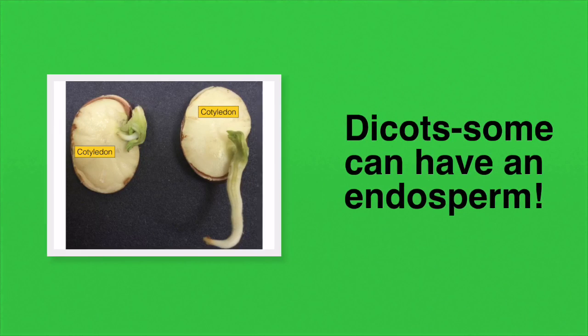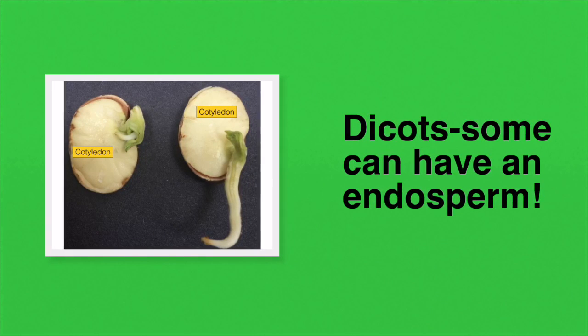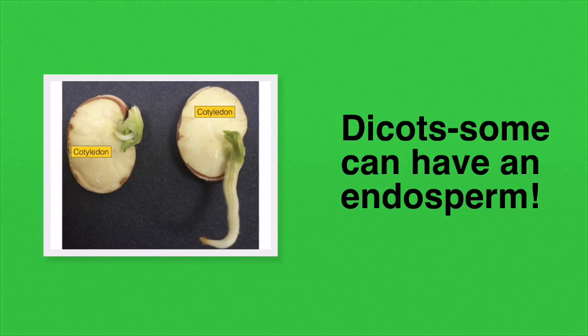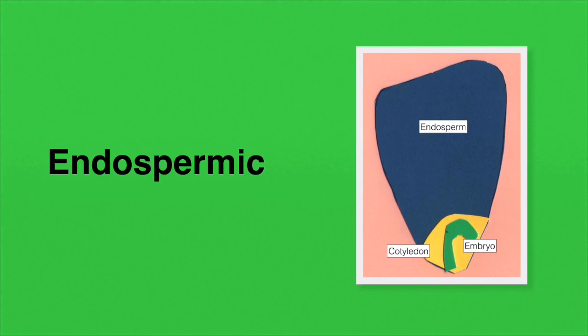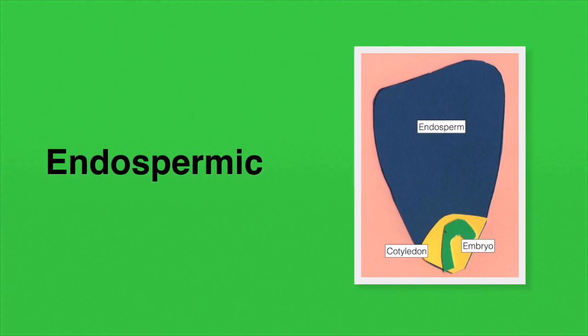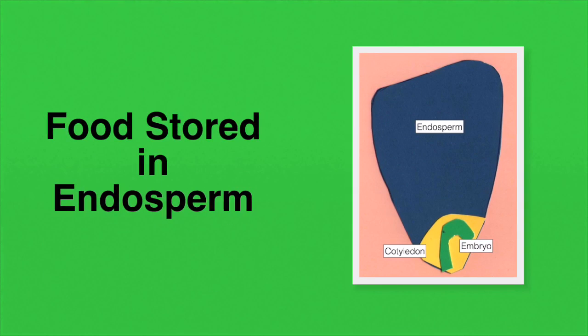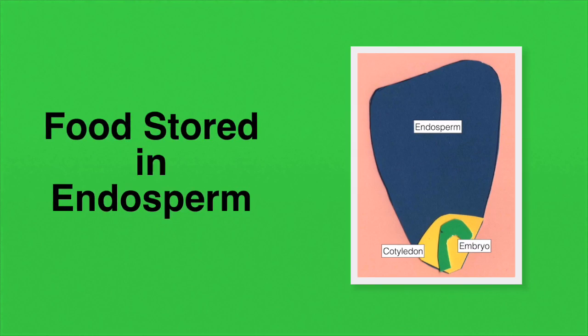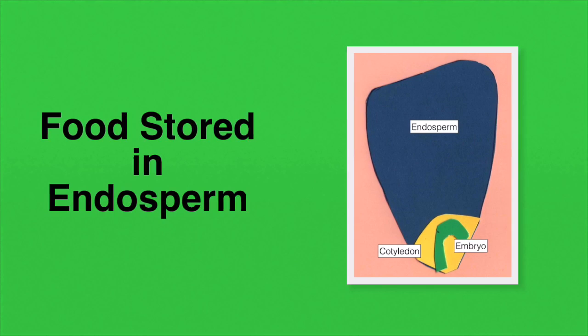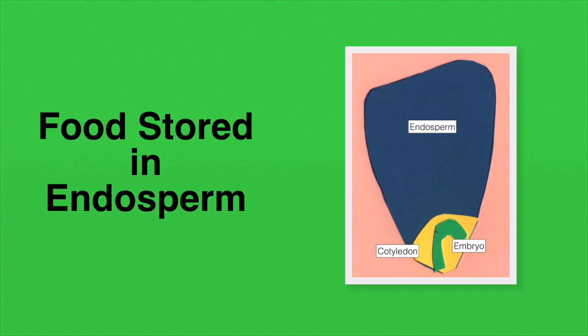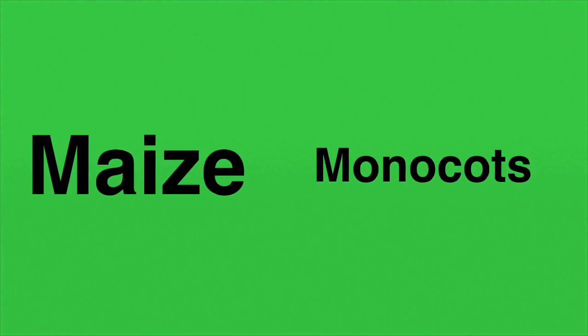However, please be aware that there can be exceptions — some dicot seeds can also have an endosperm. In contrast, endospermic seeds do have an endosperm at maturity. In endospermic seeds the food reserves are stored in the endosperm, and from here the food is passed to the cotyledons and onwards to the embryo plant as it grows. Maize is an example of an endospermic seed, and endospermic seeds tend to be monocots — they have one cotyledon.